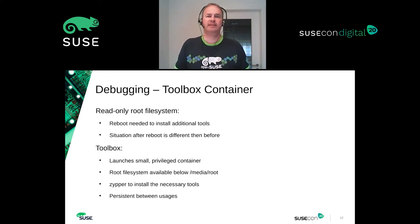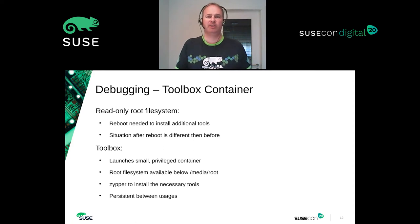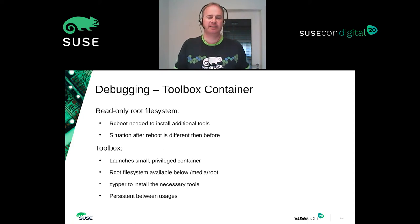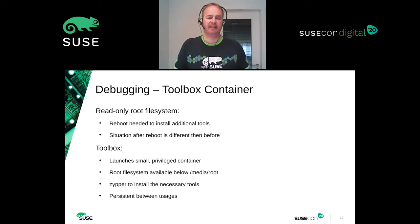Now, a read-only root file system means if you need debugging tools for network, your application, or your workload, you cannot easily install them. Because with atomic updates, you always have to reboot to activate changes. But if you reboot, your workload or setup is different and the situation is different than before. This makes debugging really hard.